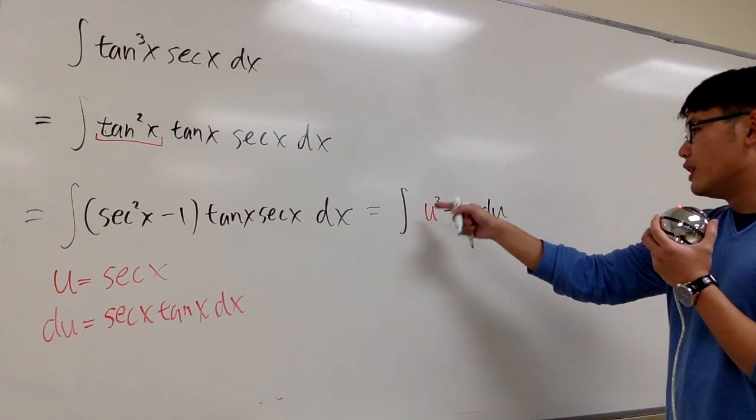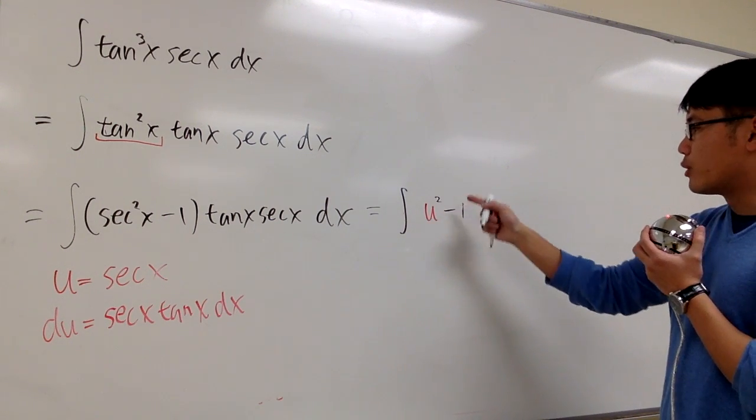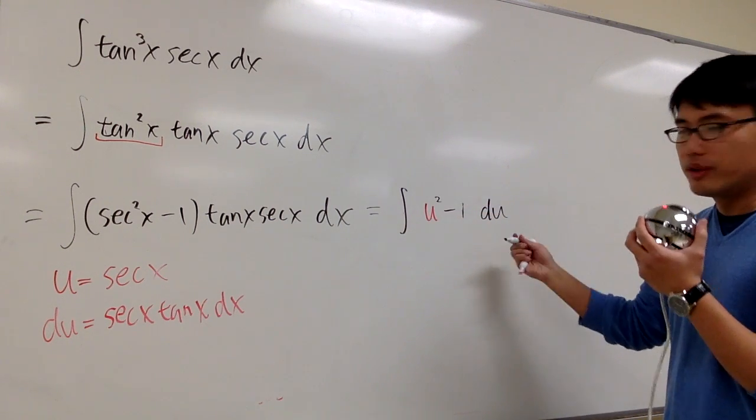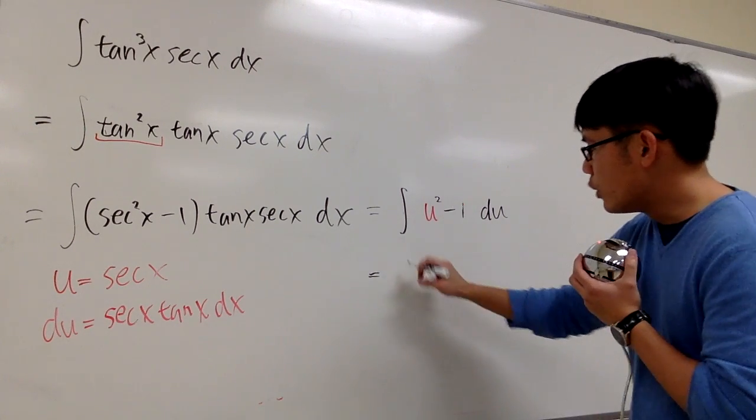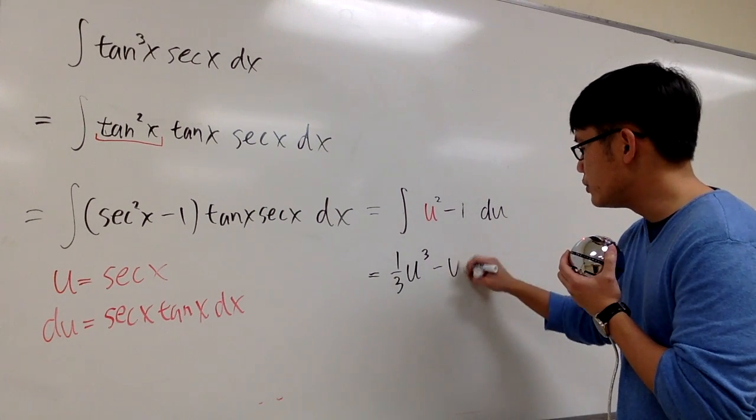And the question becomes, what's the integral of u to the second power minus 1? In the u world, we can totally do that, right? This will be 1 third u to the third power minus u.